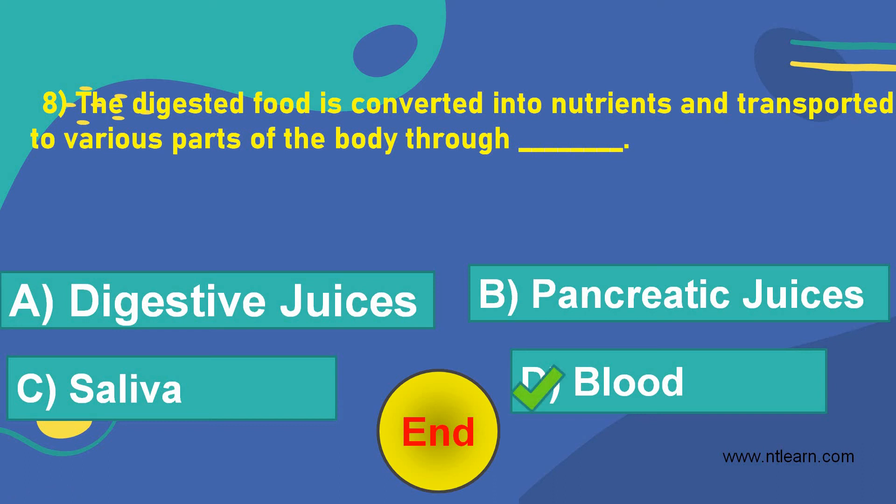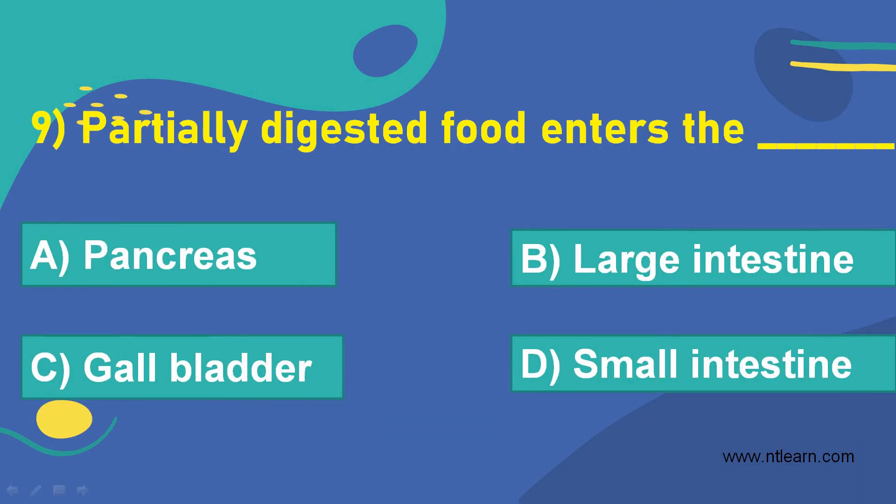Let's move on to the next question. Partially digested food enters the dash. Option A, pancreas. Option B, large intestine. Option C, gallbladder. Option D, small intestine.